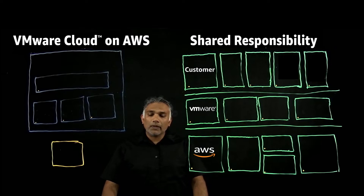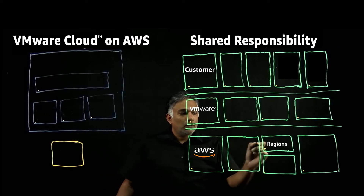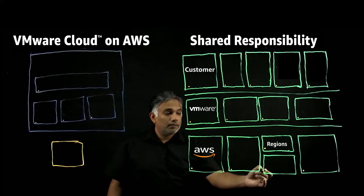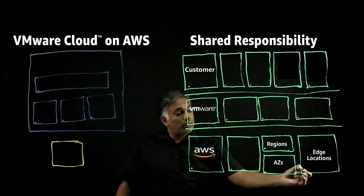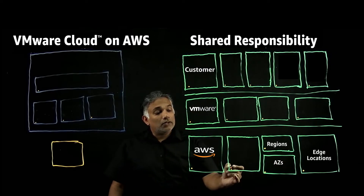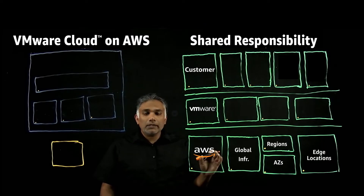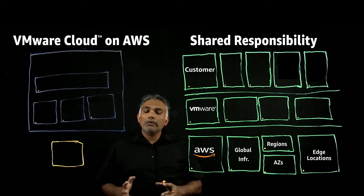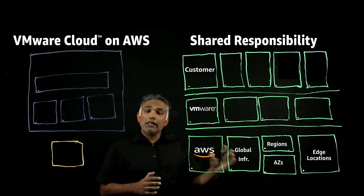If we look at AWS responsibility, AWS currently has 26 regions at the recording of this video. We also have 84 availability zones across those regions, and over 400 plus edge locations. This is all running on AWS global infrastructure. What this means is that AWS is responsible for the building, the facilities, the cooling, all the components that run within the data center, as well as the security of the data center. This is AWS responsibility.